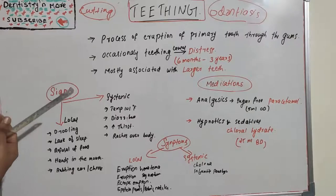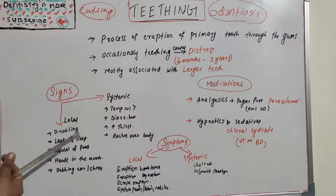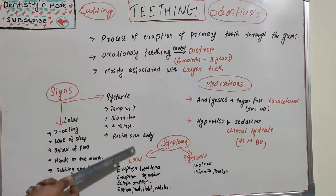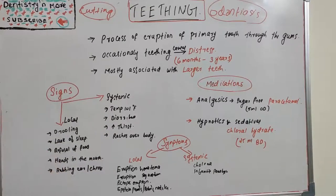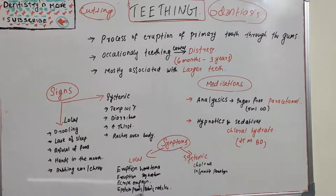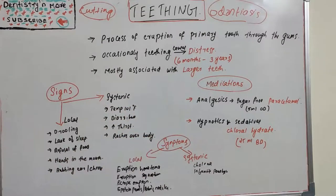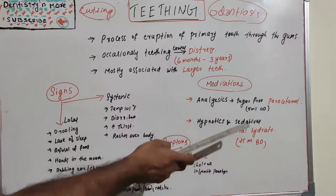Systemic signs include irritability and crying, fever over 101°F, diarrhea, runny nose and cough, prolonged fussiness, rash over the body, increased thirst, and loss of appetite. Additional symptoms include eruption hematoma, eruption sequestrum, ectopic eruption, Epstein pearls, Bohn's nodules, and systemic conditions such as cholera and infantile paralysis.